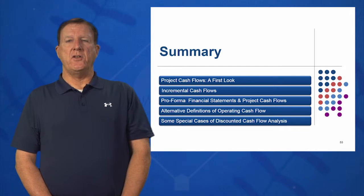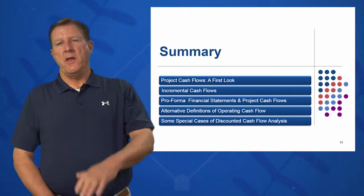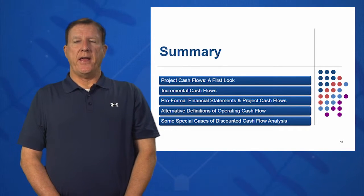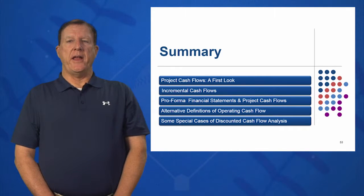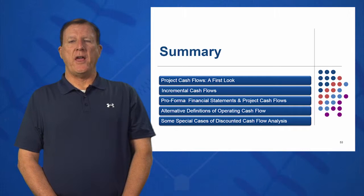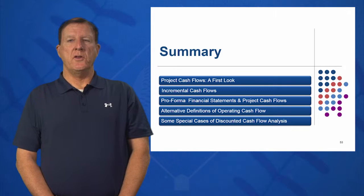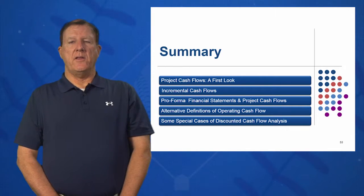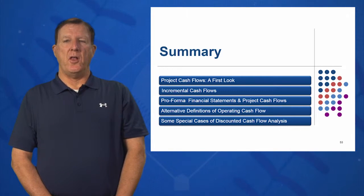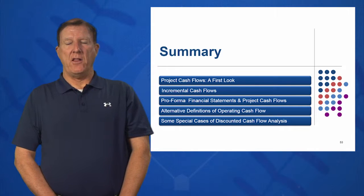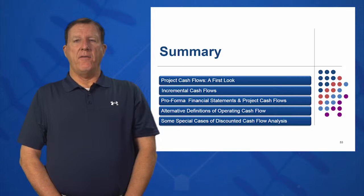We looked at three new definitions of OCF. Whenever calculating OCF, build the income statement vertically down to net income — if there's no interest expense, you can use the bottom-up approach to calculate OCF quickly. Finally, the three special cases of DCF analysis are: cost-cutting proposals, developing competitive bids, and evaluating two types of equipment with dissimilar lives and dissimilar maintenance costs using equivalent annual cost. I hope you've enjoyed session number 10 of Introduction to Finance.